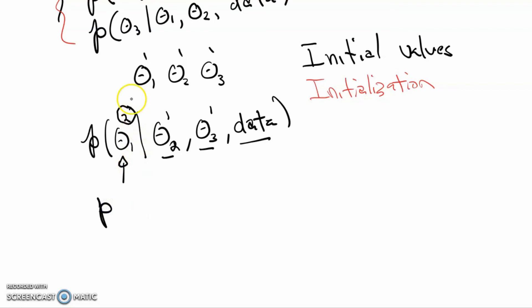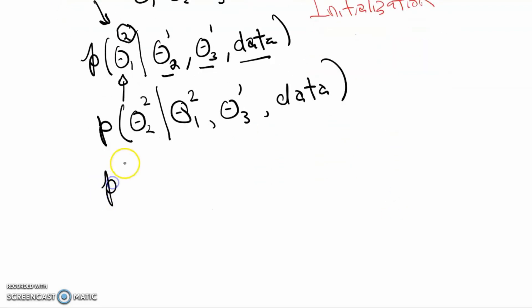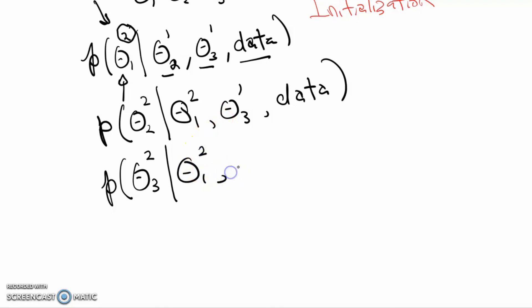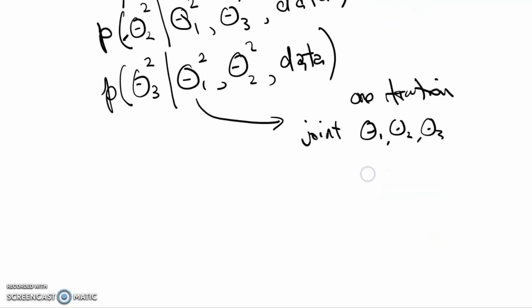We then take that new value of theta 1 and use it to calculate a new value of theta 2, given what we just obtained and the data. Finally, we get a new value of theta 3 based on the new value of theta 1 and the new value of theta 2, along with the data. Once we've completed this one iteration, we have a joint sample of theta 1, theta 2, and theta 3, and we simply repeat this process thousands of times.